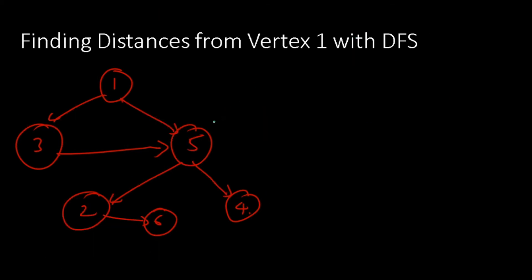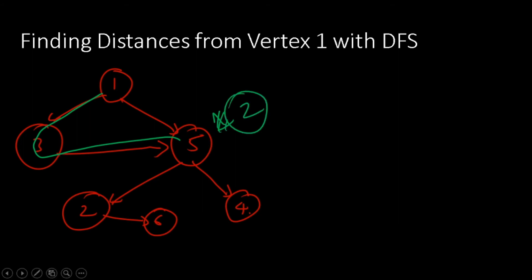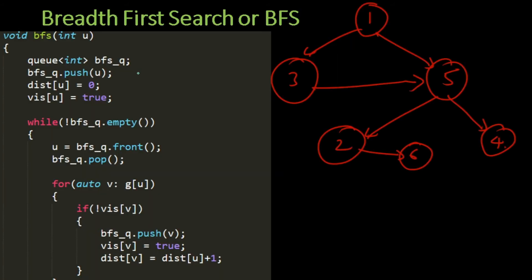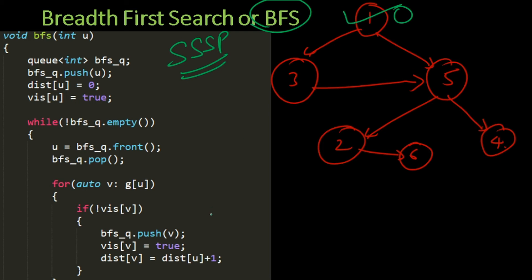Unless we re-evaluate things again and again and revisit already-visited vertices — which makes the problem very complicated — we cannot solve this shortest path problem with depth first search. So let us attempt to solve this single source shortest path problem using the breadth first search strategy. To start, we label the distance from 1 to 1 as 0. We start with an empty queue, push the source vertex 1 into the queue, and mark it as visited.